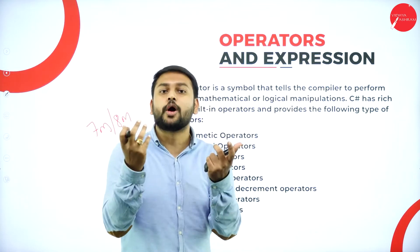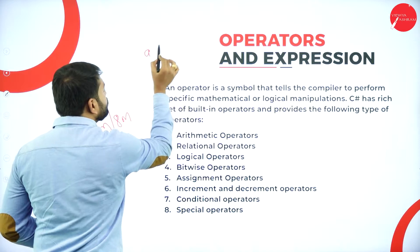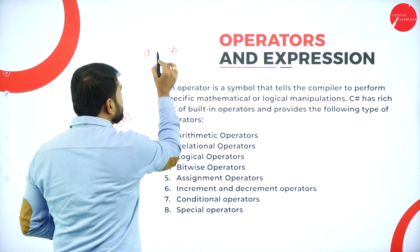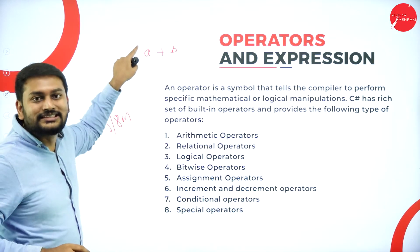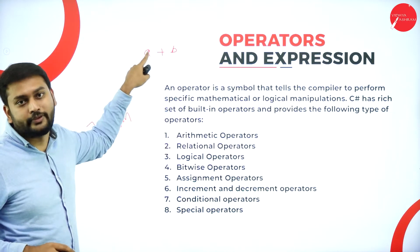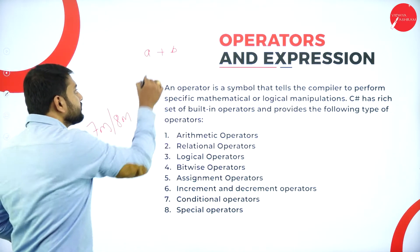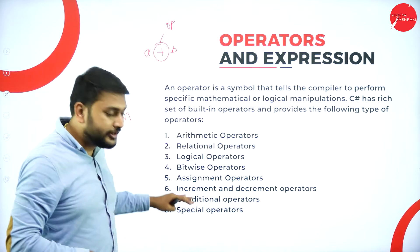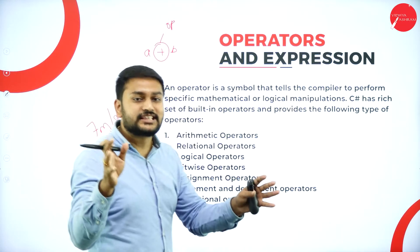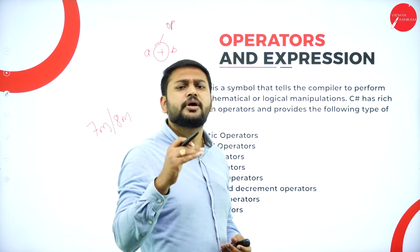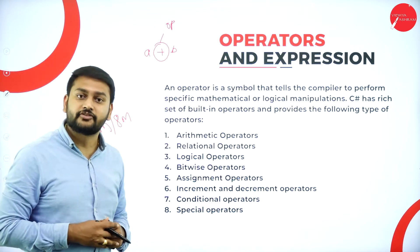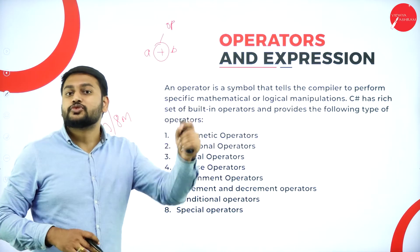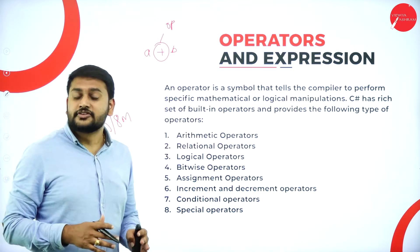For example, take a and b — treat these as operands. I take one symbol called plus. This is a symbol which initiates the action between two operands; that's what I call an operator. When it comes to operators, there are different types. Whenever you are writing an exam, you can expect the question: mention the different types of operators. First, list out the eight different operators.